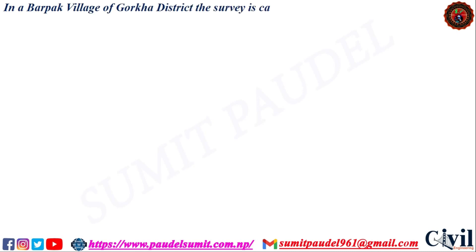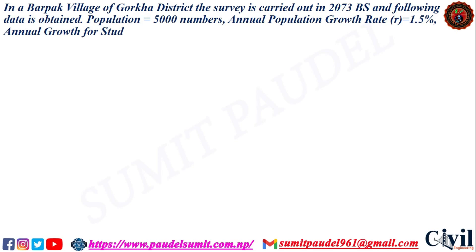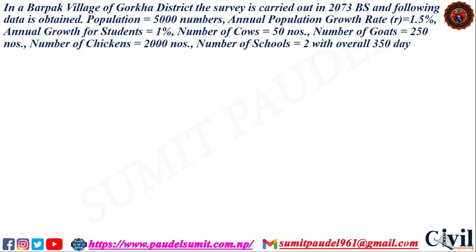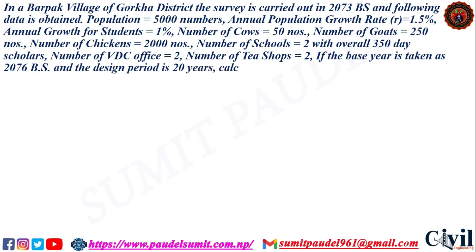A survey is carried out in BS in a village of Gorka district. The survey is carried out in 2073 BS and the following data is obtained: population is 5,000, annual population growth rate r = 1.5%, annual growth for students is 1%, number of cows 50, number of goats 250, number of chickens 2,000, number of school students 350, and other data. The base year is taken as 2076 BS and design period is 20 years. Calculate the total water demand of the village for the service year.